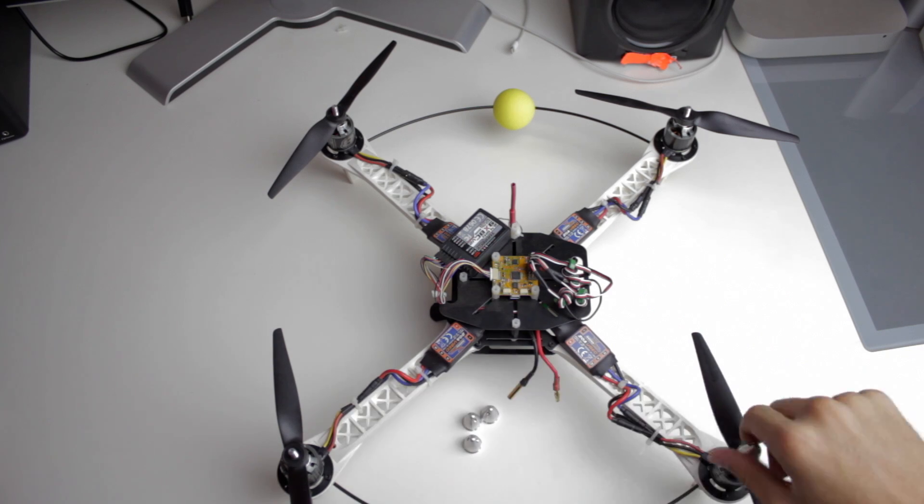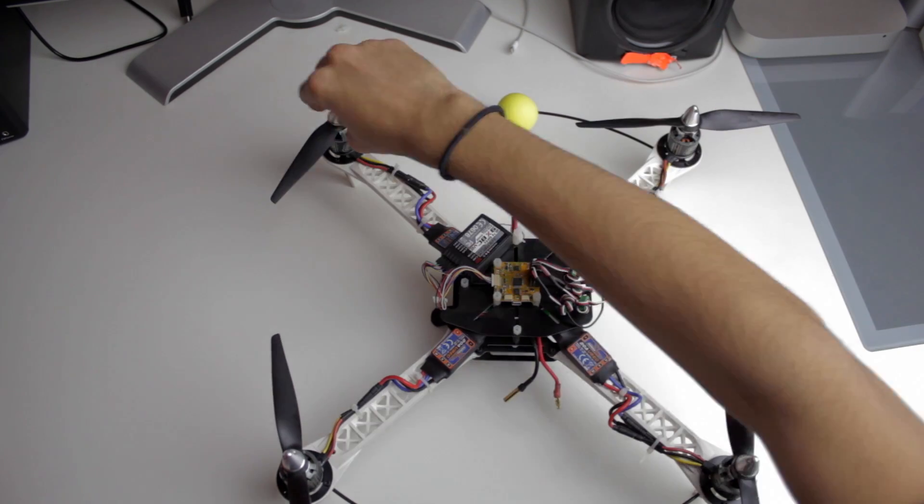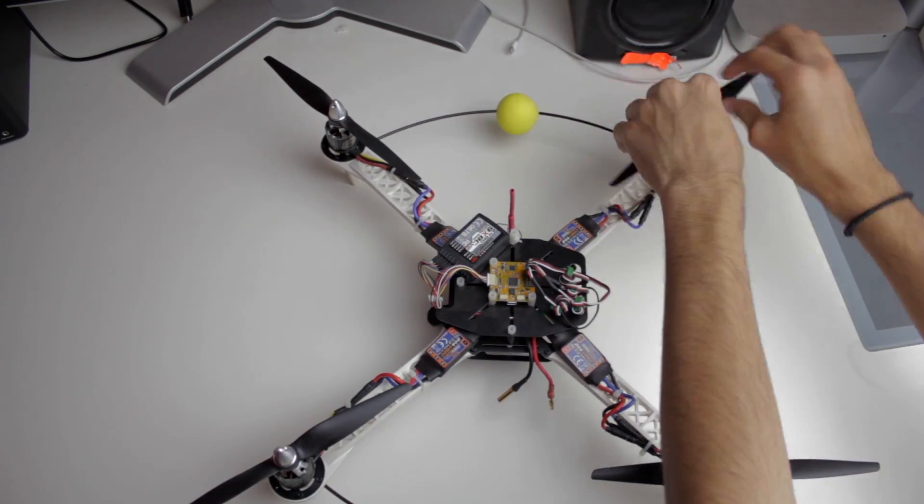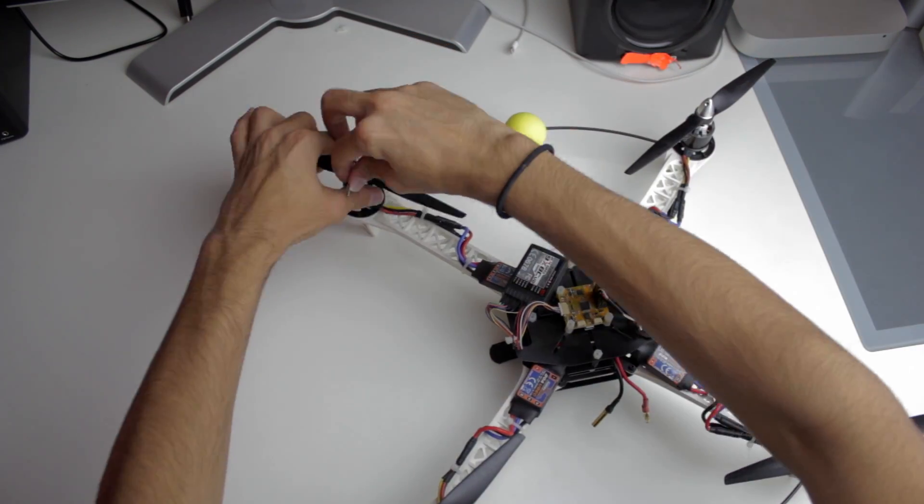The last step is to put the prop nuts on and then tighten them with some type of small tool like an allen wrench. They should be pretty tight but don't tighten it too much otherwise you could break the center of the prop.